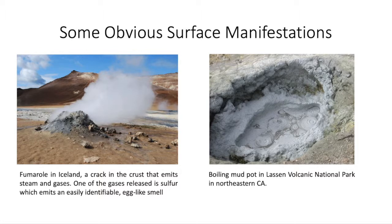Some of the obvious surface manifestations are seen in the forms of fumaroles and boiling mud pots. The first picture shows a fumarole in Iceland, which is a crack in the crust that emits steam and gases. One of these gases in particular is sulfur, and it emits an easily identifiable egg-like smell. Another one is a boiling mud pot, which is a giant hole of intensely heated mud that is so hot that it starts to boil. This picture was taken in the Lassen Volcanic National Park in northeastern California.